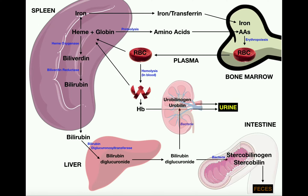To start talking about this, we need to know what happens to make red blood cells. To make red blood cells, we need amino acids to make proteins, we need iron, and we need heme. We combine all of these things together, and the process of making a red blood cell is called erythropoiesis. Erythropoiesis is done in the red bone marrow inside long bones.